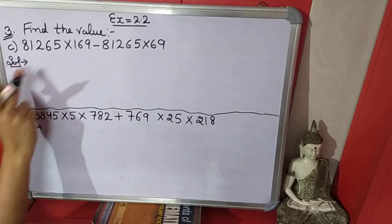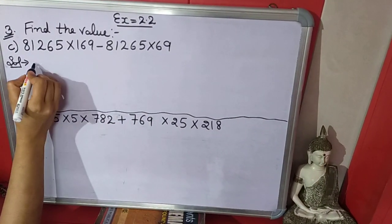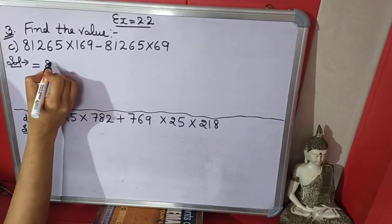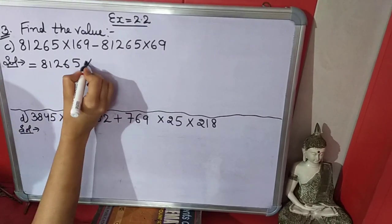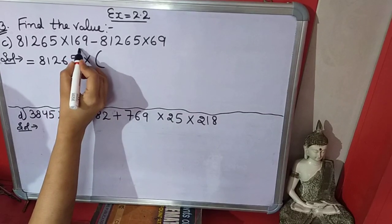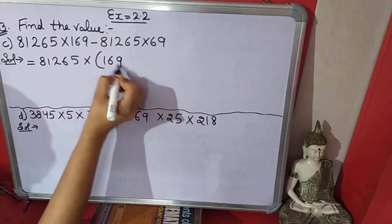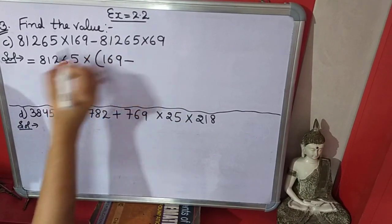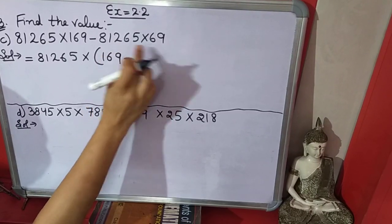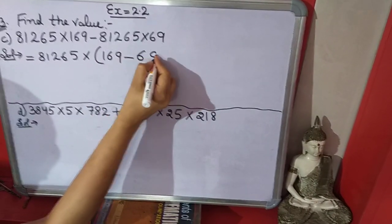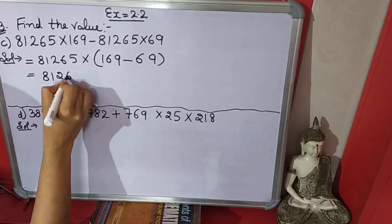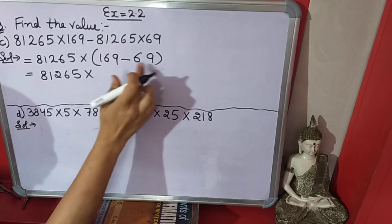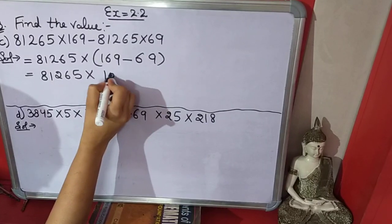We will take common this number 81265, will come outside, put bracket. What is left here? 169 minus - this is outside we will not write again - this right 69. Now solve bracket: 169 minus 69 equals hundred. Multiply it. This is answer.